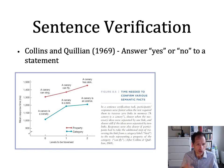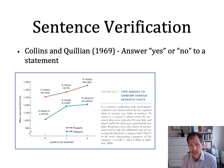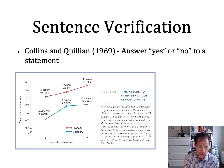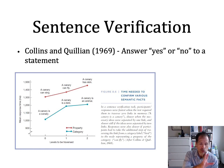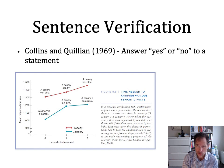So one of the earliest studies they did was a sentence verification study. They're just asking their participants to say yes or no to propositions. And you can see there are two kinds of propositions — things about object properties, and things about the category that the object belongs in.